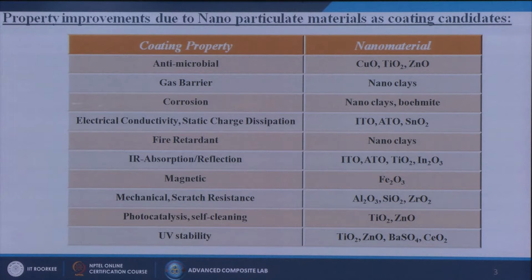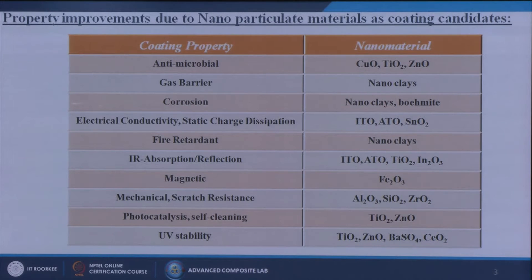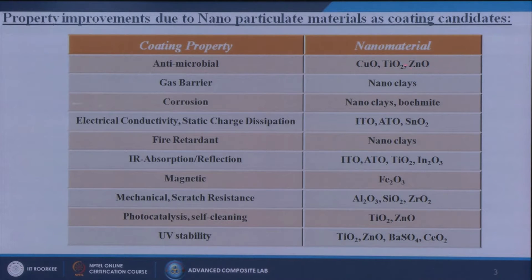Here we are showing different properties and what types of nanomaterials we can use to achieve them. If we want to increase the antimicrobial properties of our materials, we can use copper oxide, titanium dioxide, or zinc oxide nanomaterials.